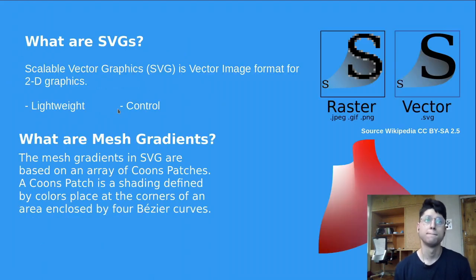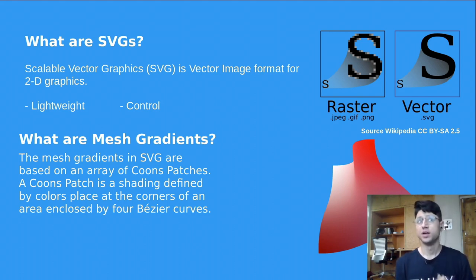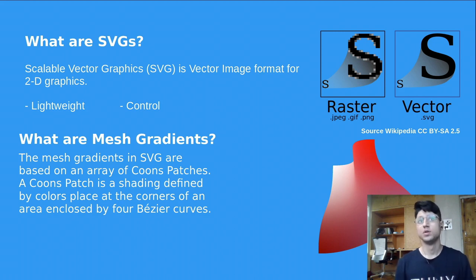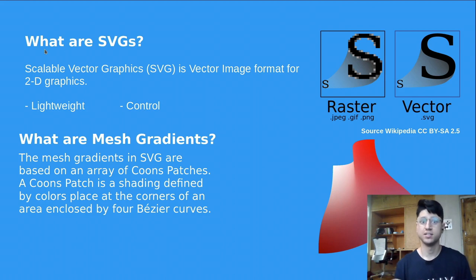So what are SVGs? SVG stands for Scalable Vector Graphics — it's a vector image format for 2D graphics. A vector image format is defined in terms of points on a Cartesian plane, and with those points you can make lines, circles, triangles, etc. Raster images, by contrast, are just a grid of pixels with information about how each pixel should look.